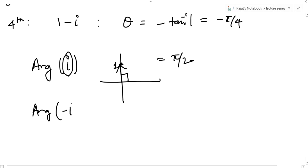What will be the argument of minus i? Now this point will lie here at 0, minus 1. So the argument will be minus π by 2.